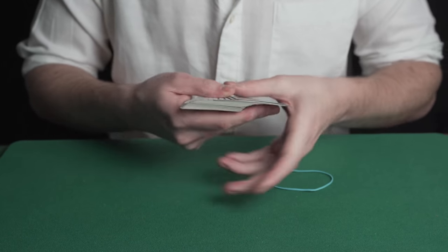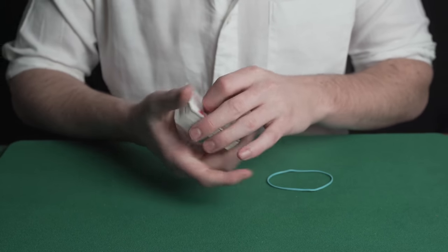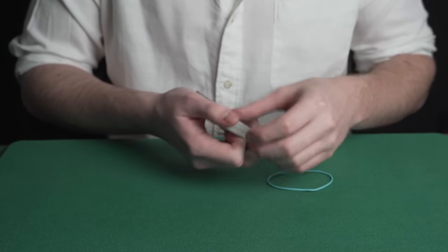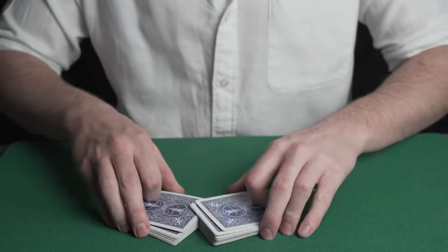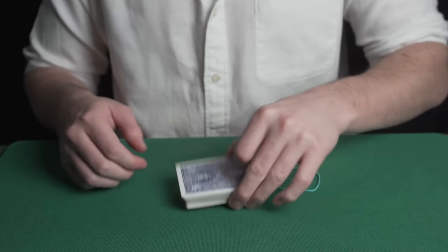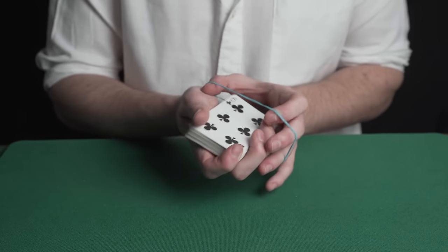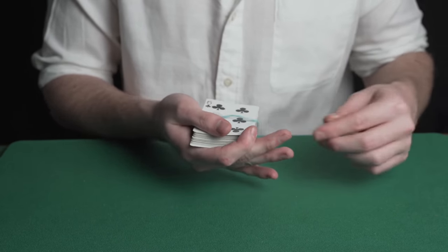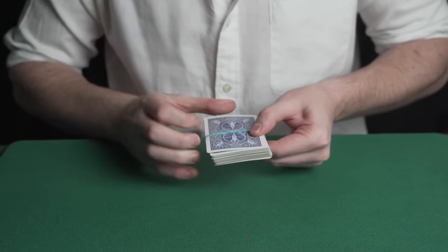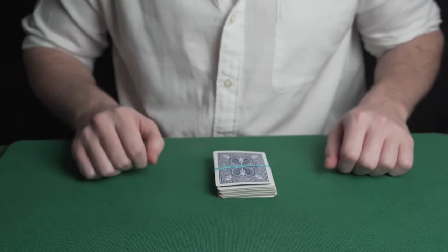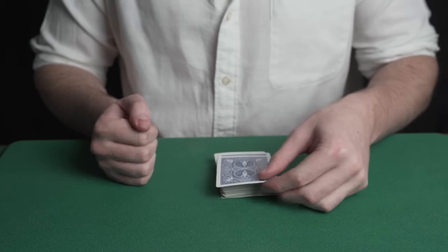The spectator chooses any card that they like, in this case it's the ten of hearts. The ten is placed in the middle of the deck and all the cards are then shuffled. The magician then takes a rubber band and wraps it around the cards. He places the cards on the table. He suddenly hits the table and the spectator's card magically pops out.